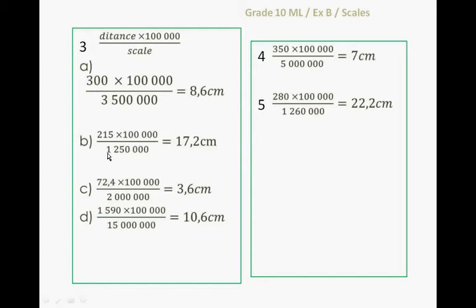215 kilometers times 100,000 to convert to centimeters, divided by 1,250,000, gives me 7.2 centimeters. 72 kilometers converted to centimeters — multiply by 100,000 then divide by 2 million — gives me 3.6 centimeters. Lastly, 1,590 kilometers is calculated similarly.